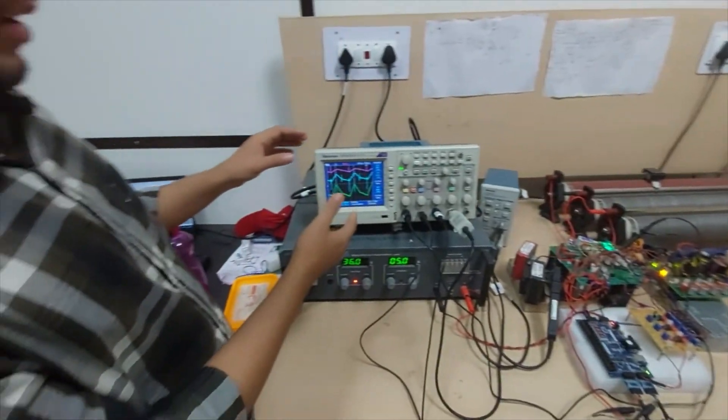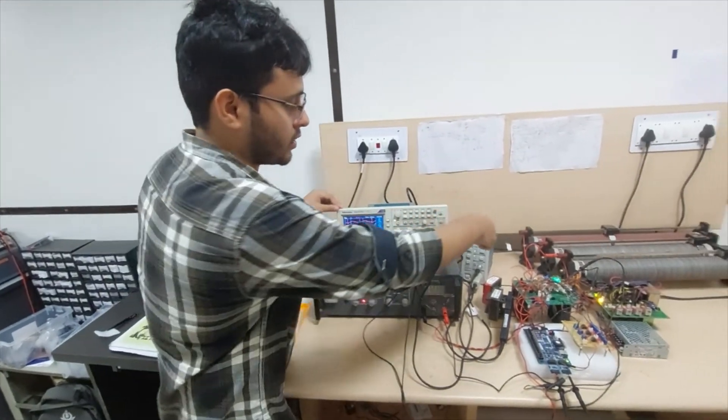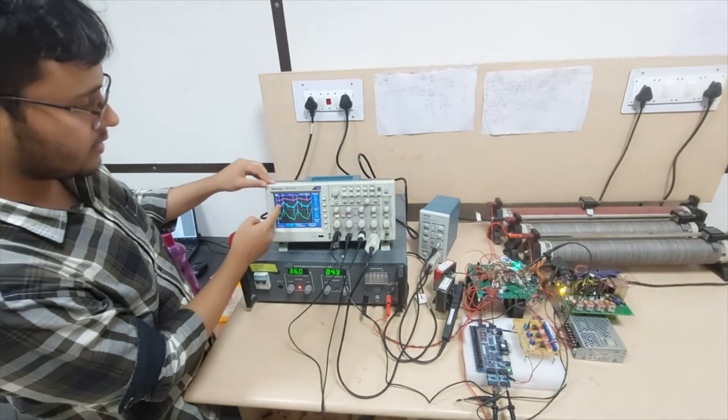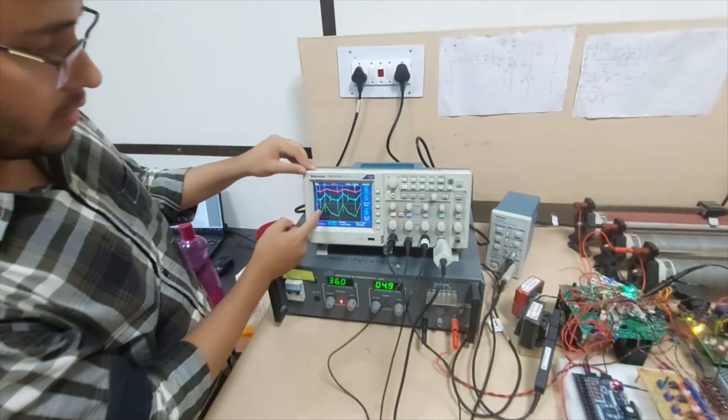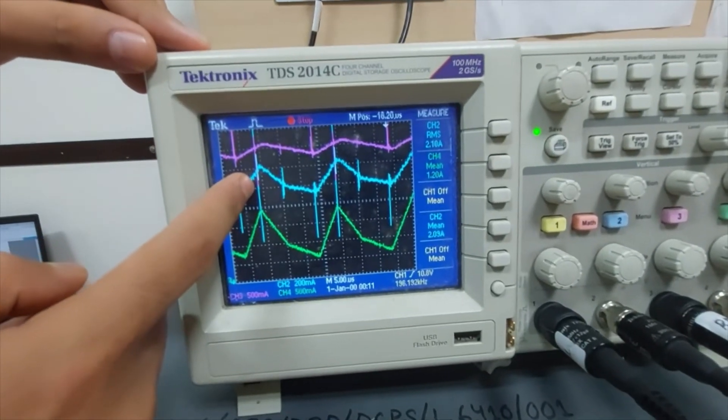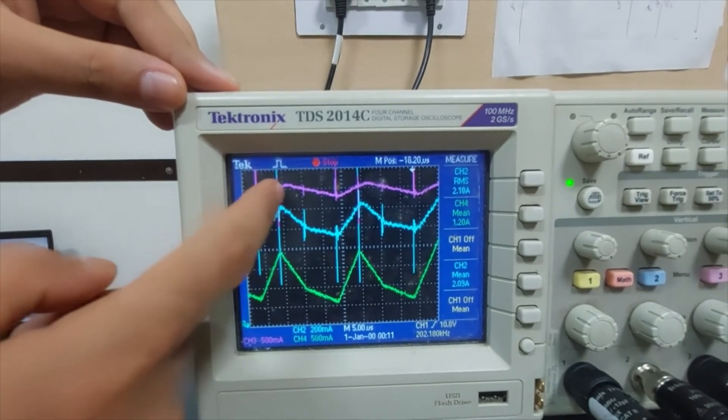This is the result that we are getting from our system. This is the sensed current using the Tektronix high frequency current probe, and this is our estimated result. This current is for the IL2 current. We can see from this result that this is the actual current and this is the estimated current. They are matching perfectly. And this is the IL1 estimated current that is shown in purple here.